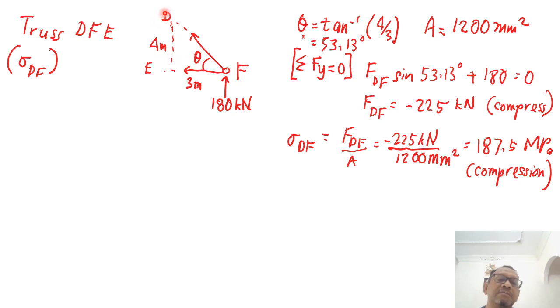Now, I look at truss DFE because I am interested to find the stress at component DF. So here is that I look at this point F, and I label all the forces in the direction of DF, in the direction of DE. And then there is an external force, 180 kilonewton. So I need to know my theta here because in order for me to resolve the force, I need to know the theta. So theta is, the angle theta is, the height is 4, the base is 3. So theta equals to inverse tangent 4 over 3. And that gives us 53.13 degrees. And I know my area is 1200 millimeter square.